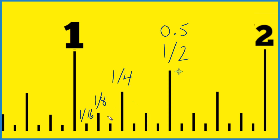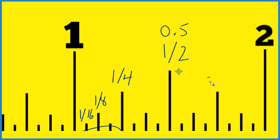So we want to know what this mark is right here. Here's one fourth, two fourths, three fourths — that right there is three fourths of an inch. And three divided by four is 0.75. So we're narrowing it down.